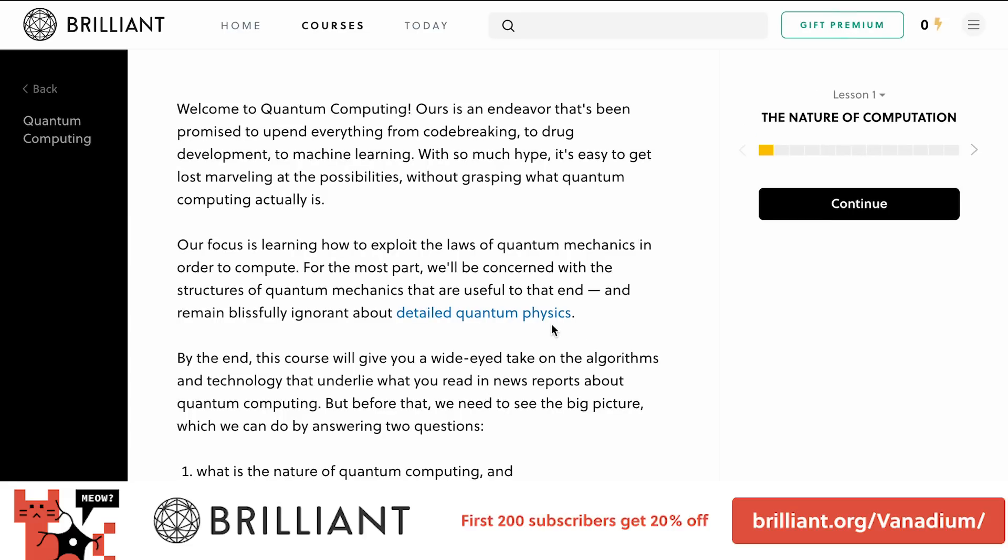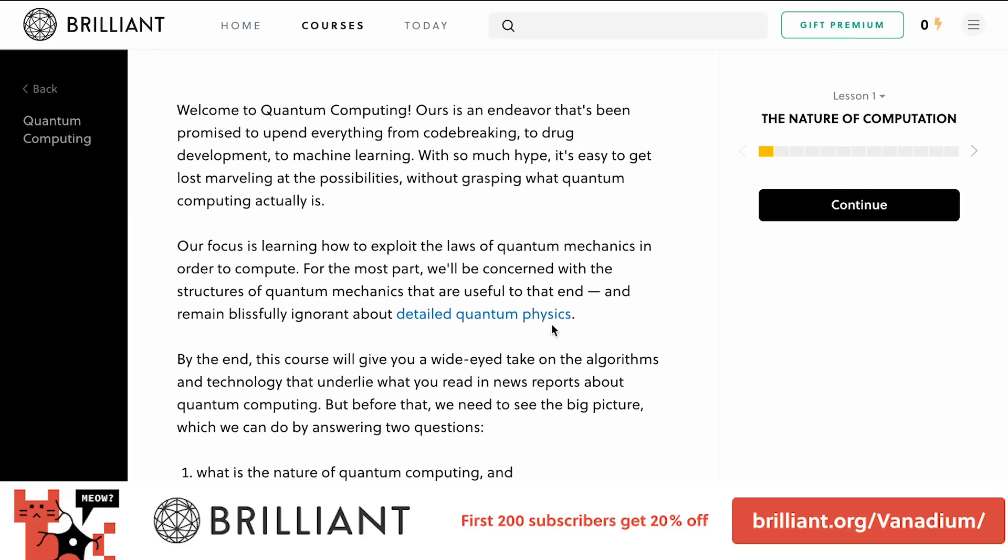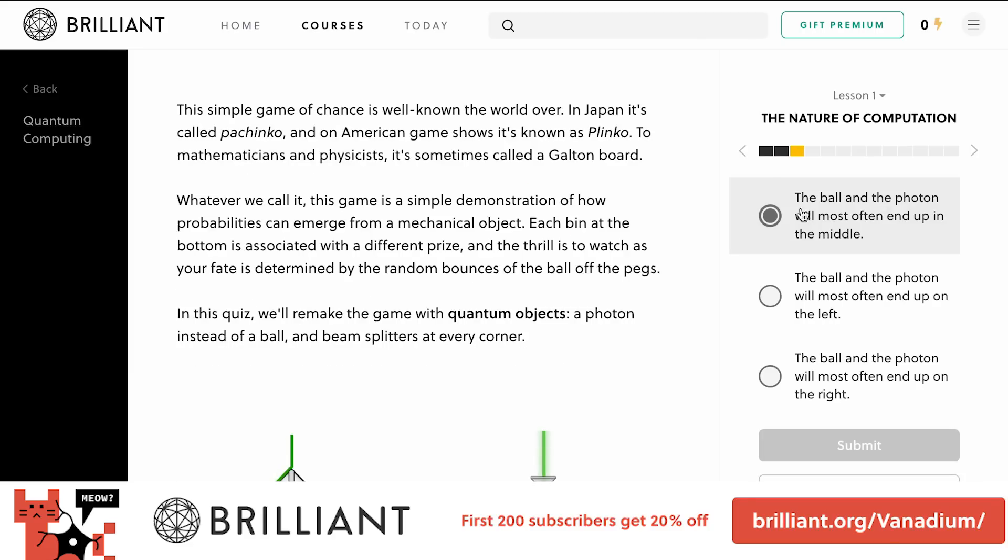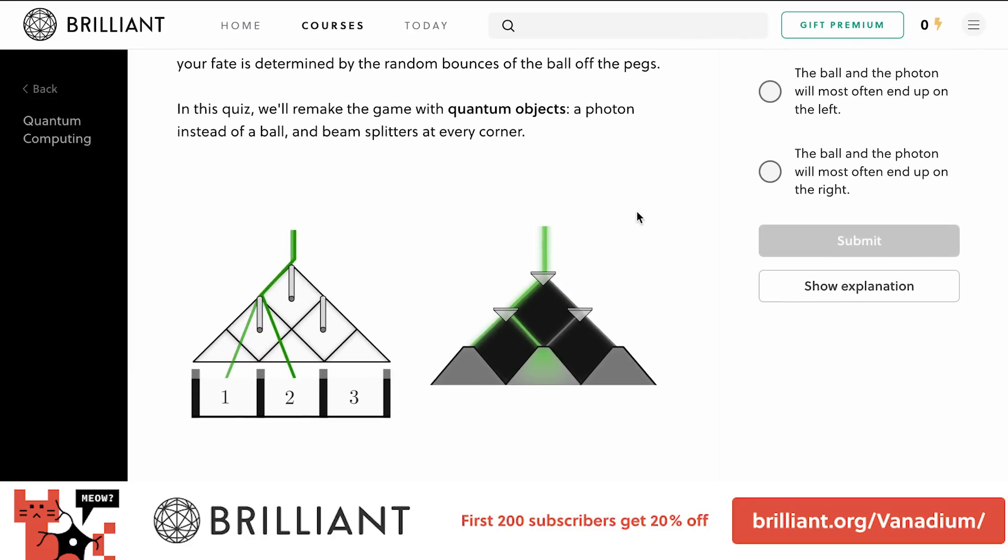After I'm done blowing your mind about the magic of ASML's extreme ultraviolet lithography machines, check out some of their courses for free at Brilliant.org, or click the link in the description. For the esteemed Vanadium audience, they're offering 20% off the price of their annual subscription for the first 200 people.